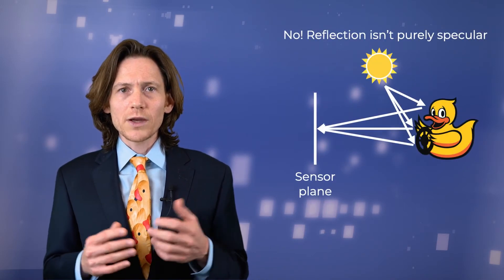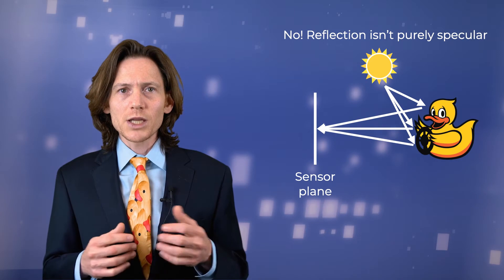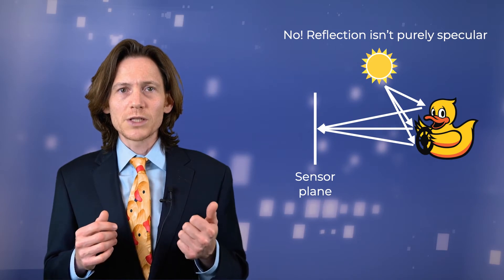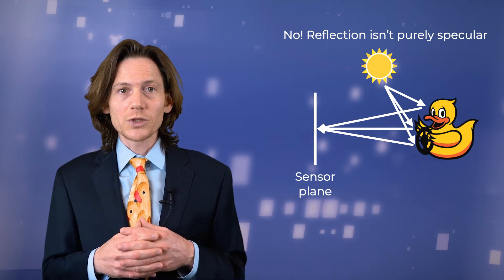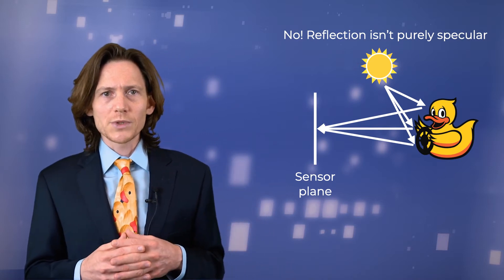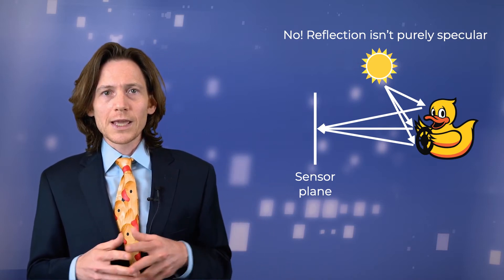The effect of specular and diffuse reflection is that each point in the sensor plane will receive light from different points on the object. This makes it essentially impossible to determine how individual points in the scene contributed to the recorded intensities, resulting in a washed-out image.